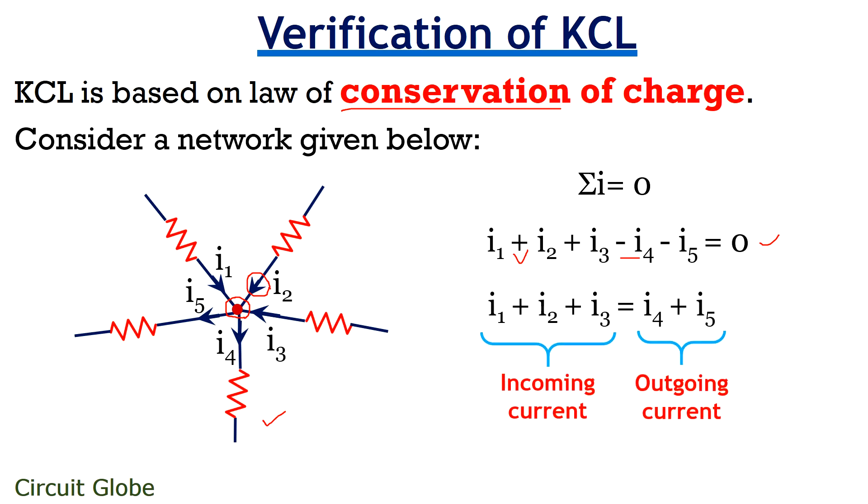we will get I1 plus I2 plus I3 is equals to I4 plus I5. Here I1, I2 and I3 are the incoming currents, while I4 and I5 are the outgoing currents. And we can clearly see that these two are equal. Thus it verifies the law of conservation of charge and so KCL.